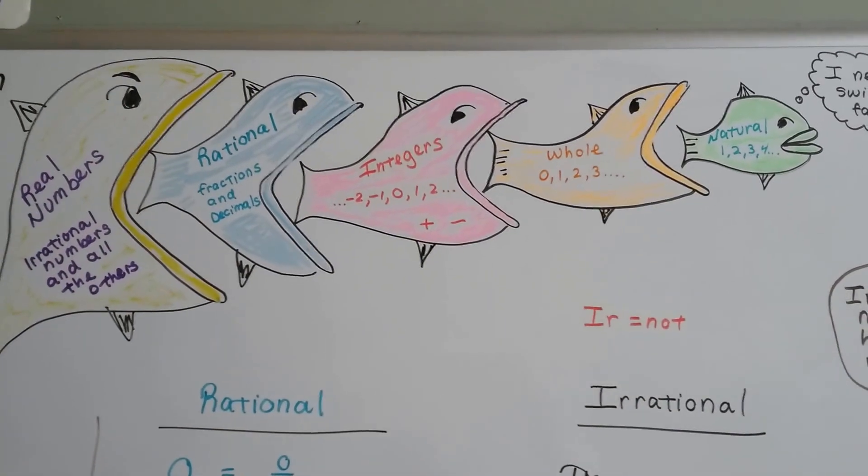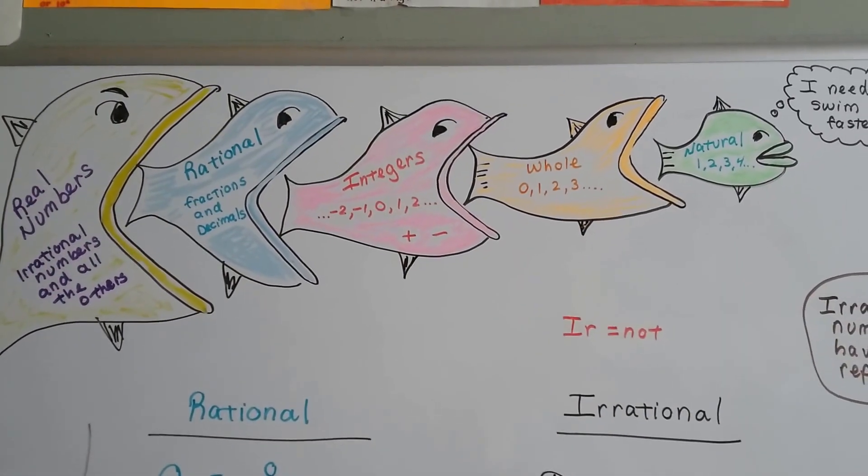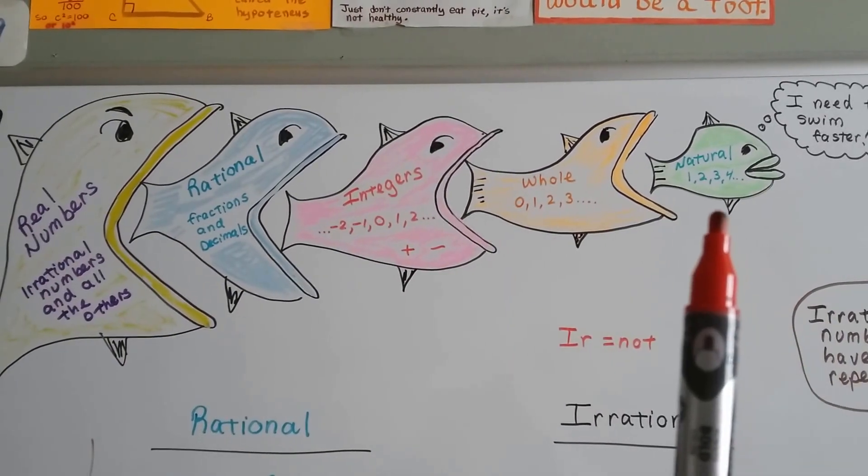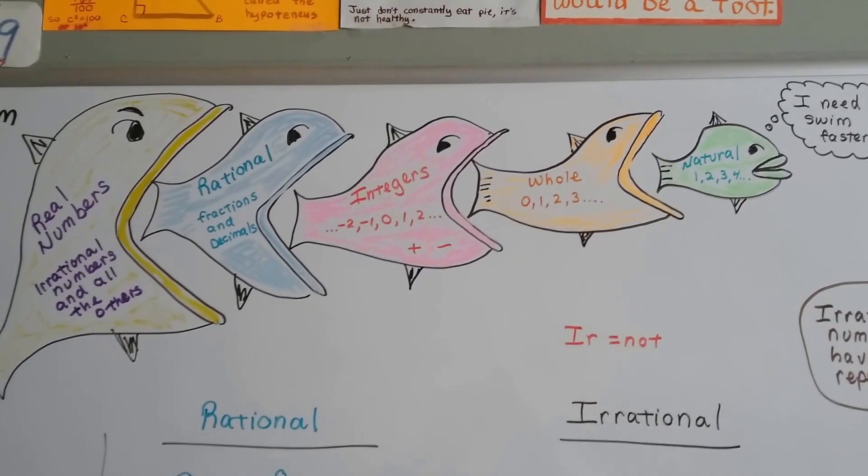I've got all these fish, and if you look at the smallest one here, he's all the natural numbers. He's the counting numbers: 1, 2, 3, 4, and so on.